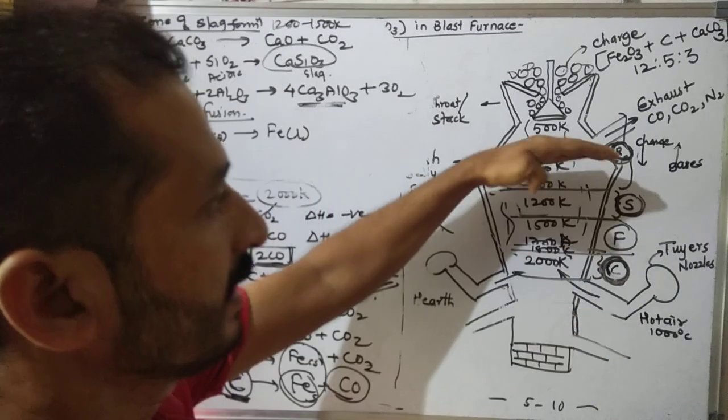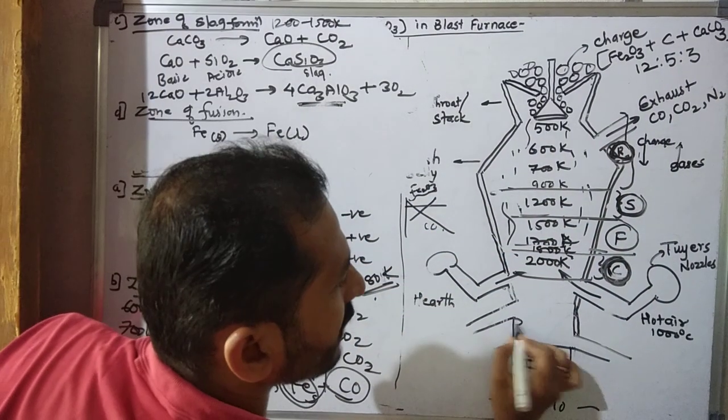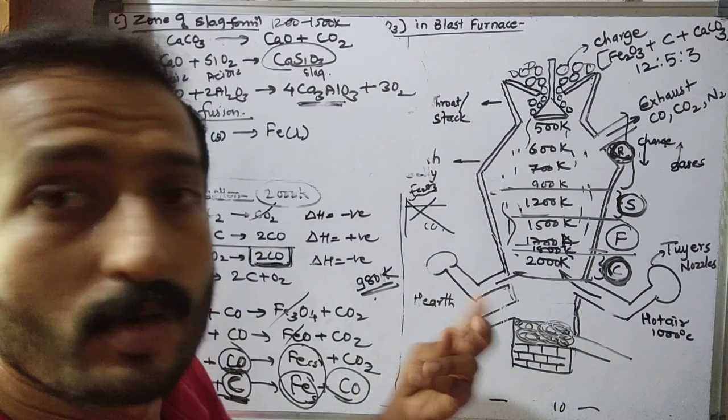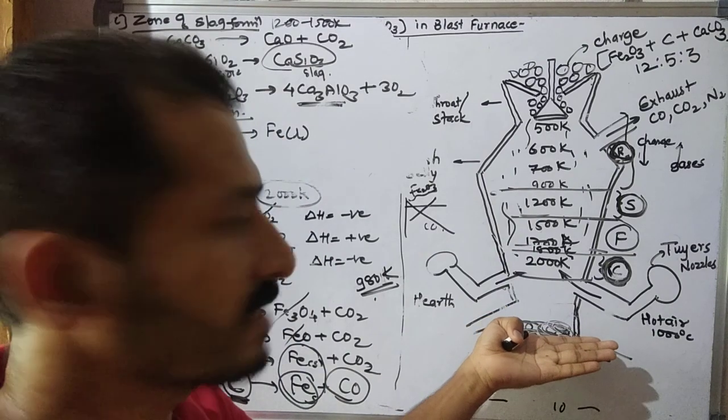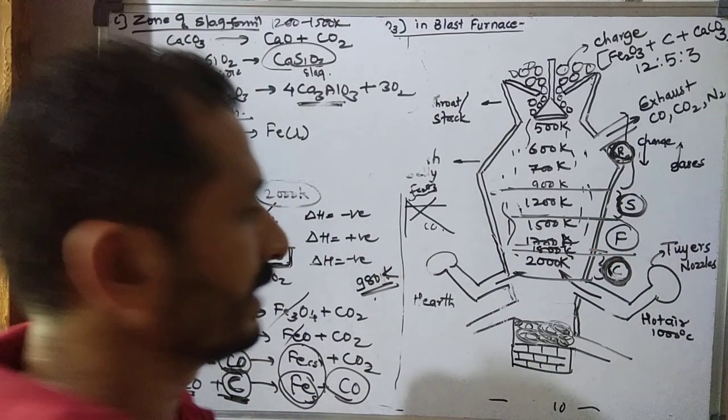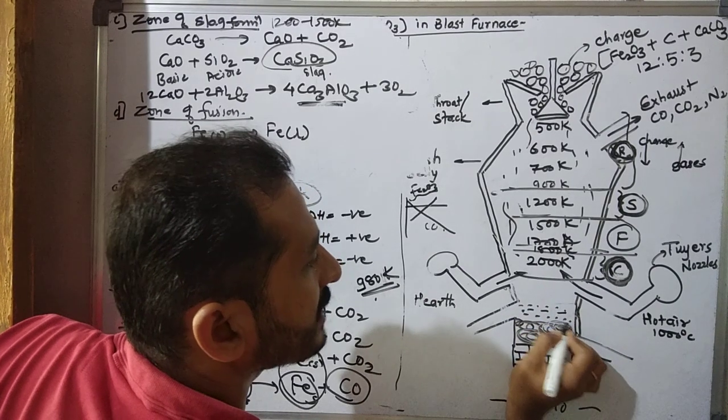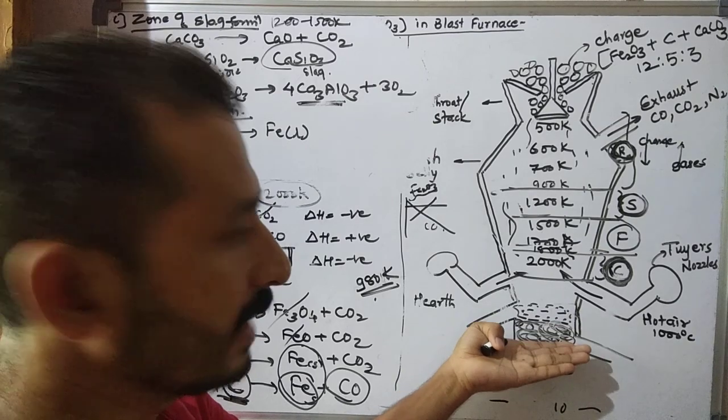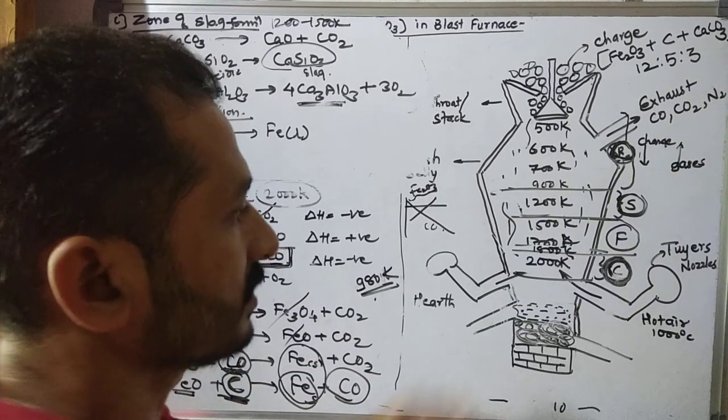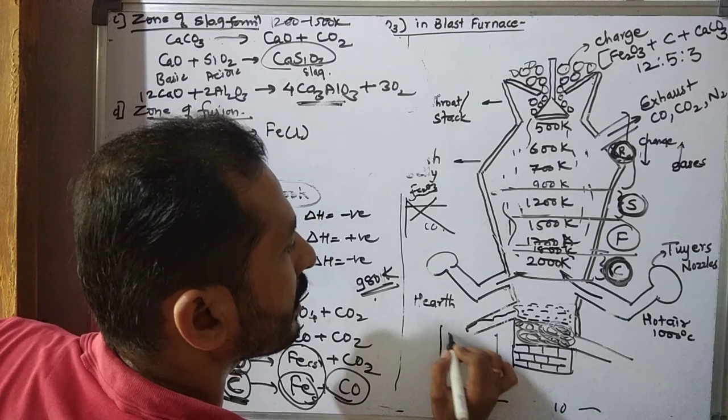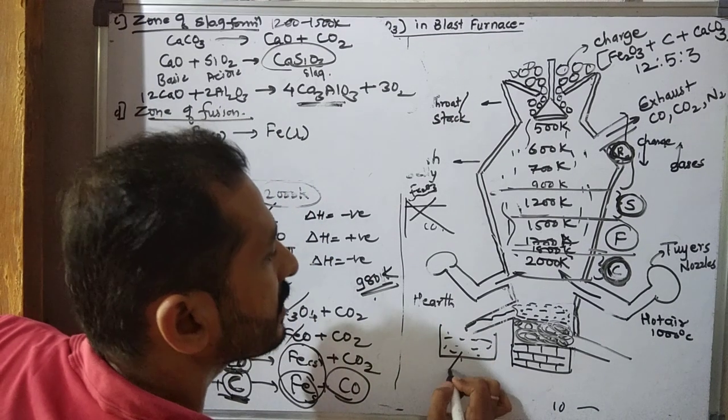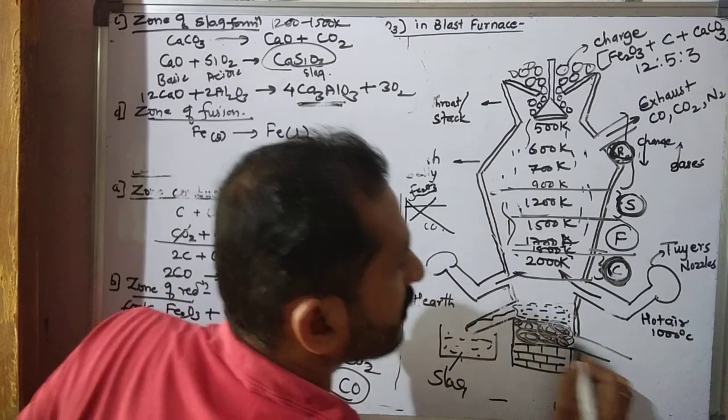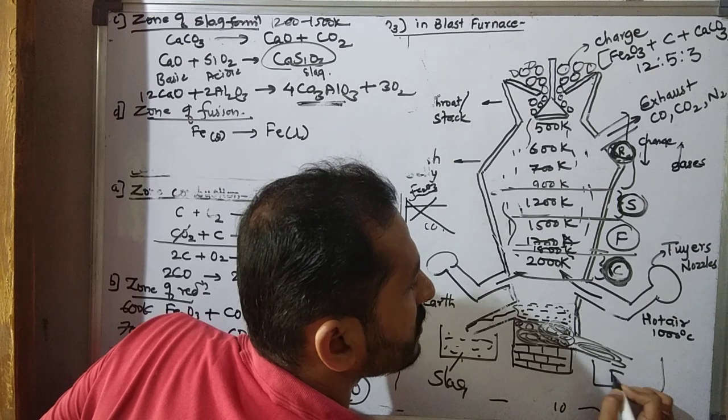Now liquid Fe is coming down, slag is also coming down. At the base, first, because of high weight, heavier Fe settles at the bottom. Above it, slag is lighter. Slag floats on heavier Fe. Fe is heavier, so it goes to the bottom, and slag stays on top. Slag is removed through this separate container at a higher level. And Fe, being heavier, is collected in a separate outlet at the base.